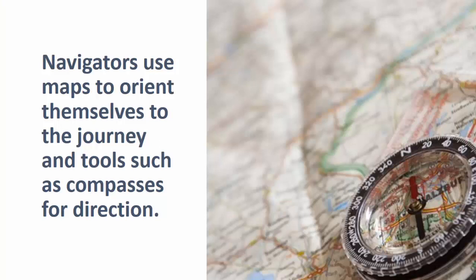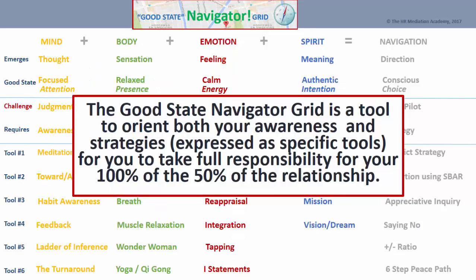Navigators use maps to orient themselves to the journey, and tools such as compasses for direction. The Good State Navigator Grid is a tool to orient both your awareness and strategies, expressed as specific tools, for you to take full responsibility for your 100% of the 50% of the relationship.